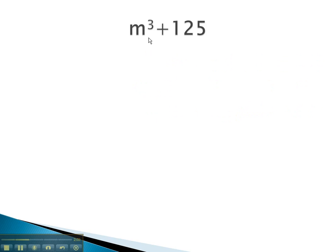In this example, we see m³ + 125. The cube root of m³ is just m, and the cube root of 125 is 5, because 5³ is 125.